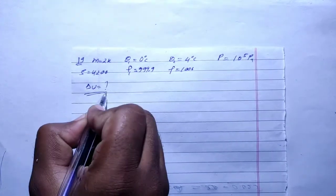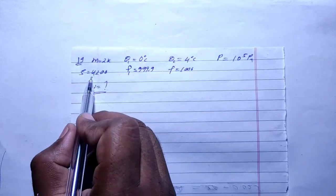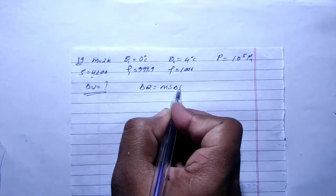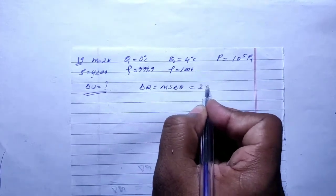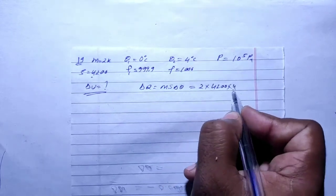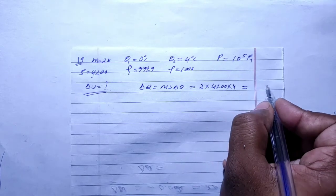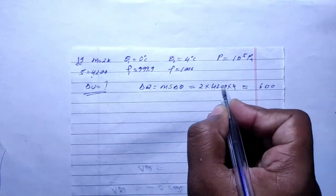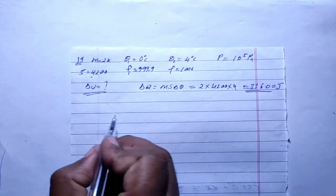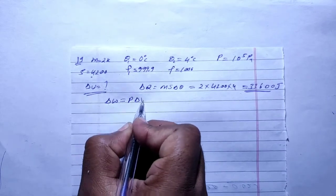First, find the change in internal energy. We have change in temperature and specific heat capacity and mass given. Heat supplied Q = msΔθ. So Q = 2 × 4200 × (4 - 0) = 2 × 4200 × 4 = 33600 Joule. So heat supplied is 33600 Joule.